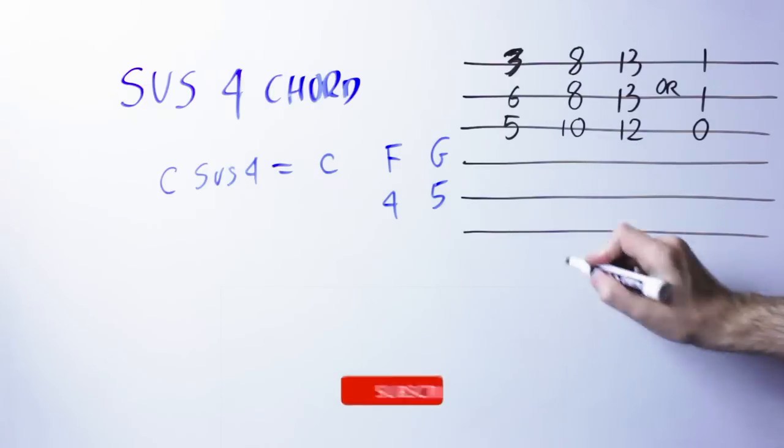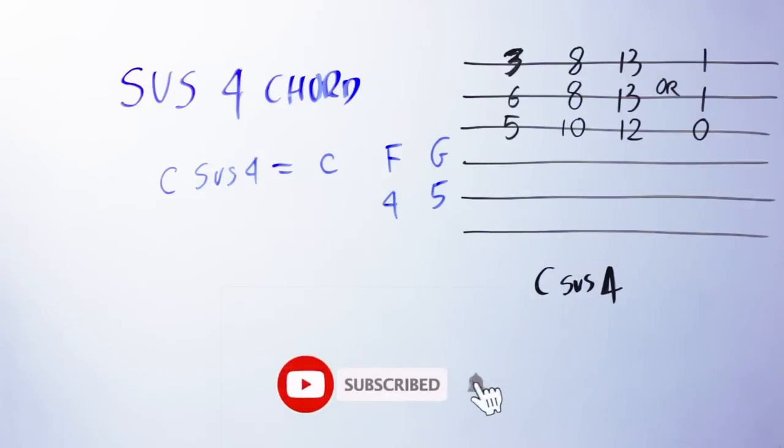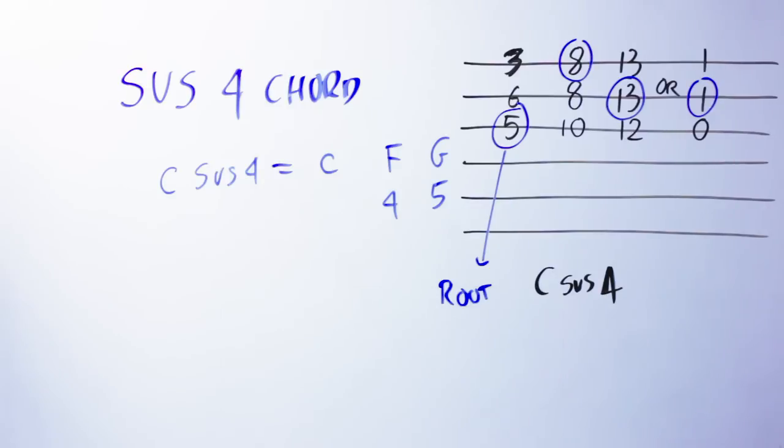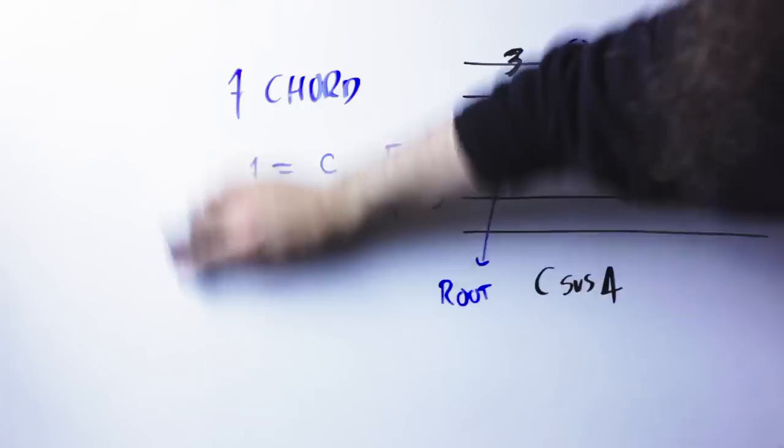All those three shapes contain the exact same note, C, F, and G. You see one of those notes is circled, that's the root of the chord. We are going to use it because it's going to help us figure out what suspended chord we are playing when we move the shape around.